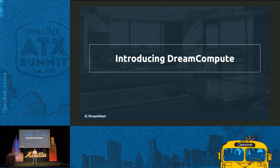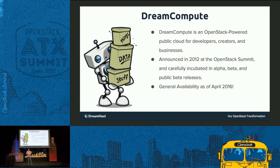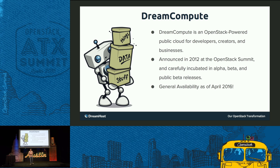I want to talk about DreamCompute, which is our OpenStack public cloud. I'll start with the basics and then get into the geeky aspects. We at DreamHost are very open about how we build our services, and I'm going to share all the details. DreamCompute is an OpenStack-powered public cloud for developers, creators, and businesses. It was announced in 2012 at the OpenStack Summit, and we've been carefully incubating it in alpha and beta releases. It's taken us a while to get to GA earlier this month, because we really wanted to test the waters of OpenStack and make sure we were configuring and designing things to really scale and delight customers.